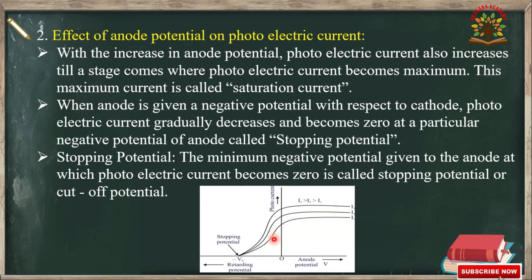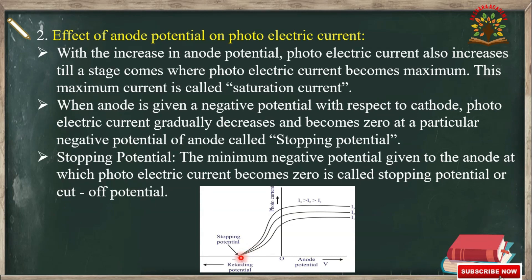From the graph, the photocurrent gradually goes on decreasing and finally becomes zero at a particular negative potential of the anode. This negative potential of the anode where photoelectric current becomes zero is known as the stopping potential. Whenever we increase the retarding potential values, the photoelectric current gradually decreases and becomes zero at the stopping potential.